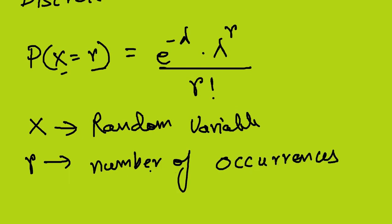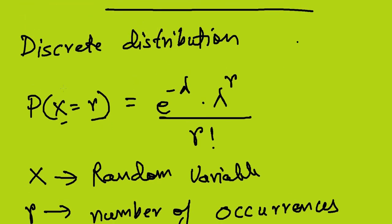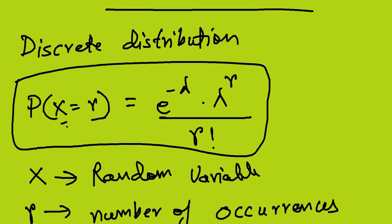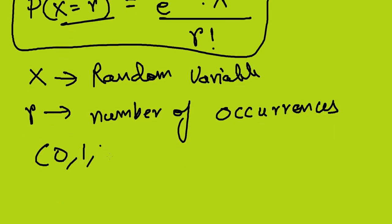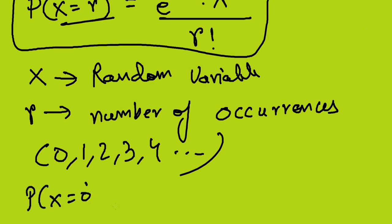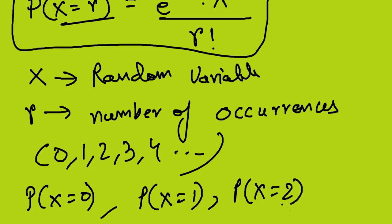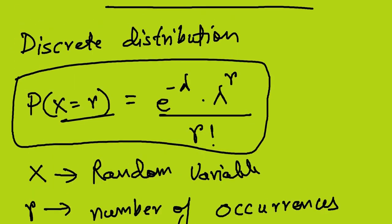The Poisson distribution is called a discrete distribution because the value of r takes discrete form: 0, 1, 2, 3, 4, and so on. That means we can calculate P(X=0), P(X=1), P(X=2), and so forth using the Poisson distribution formula.